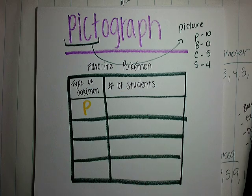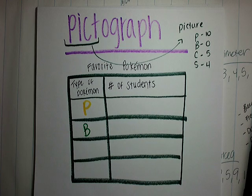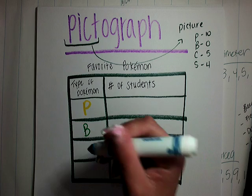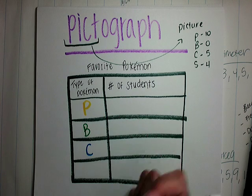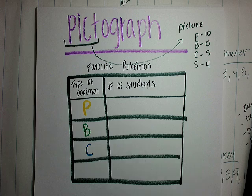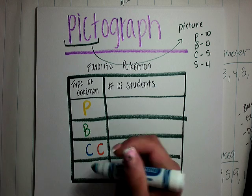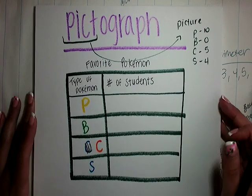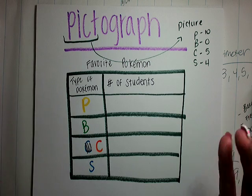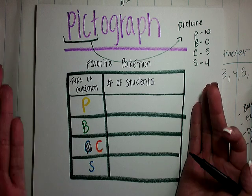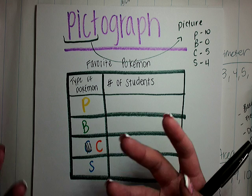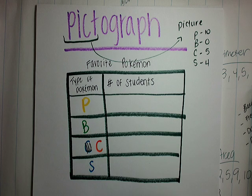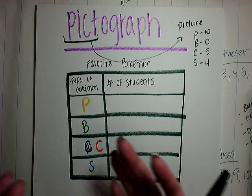Same as always, I'm just going to write the first letter. So we got Pikachu, Bulbasaur, Charmander — oh no, I used the wrong color — Charmander, and then Squirtle. Now you have to decide what kind of picture you want to use. You can choose whatever you'd like — it could be squares, triangles, it could be anything.